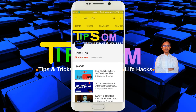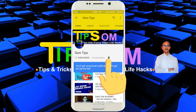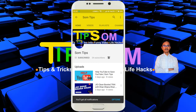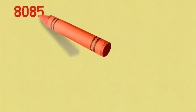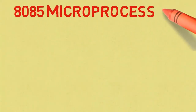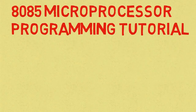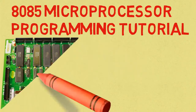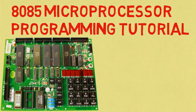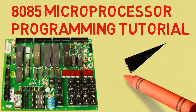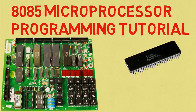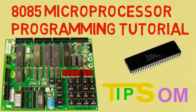Subscribe to Somtips and hit the bell icon to get notifications of new videos. Hello and welcome to Somtips. In this tutorial of 8085 microprocessor programming, I will do addition of two 16-bit numbers using an 8085 microprocessor programming training kit and a GNU simulator. Watch this video till the end.